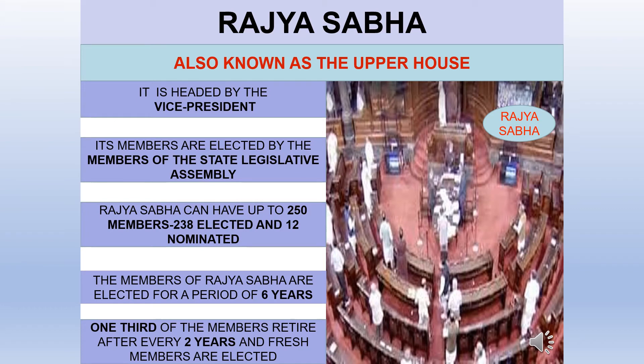Rajya Sabha. It is also known as the upper house and is headed by the Vice President. Its members are not directly elected by the people — they are elected by the members of the State Legislative Assembly. It can have up to 250 members: 238 elected and 12 nominated by the President. Members of the Rajya Sabha serve a term of 6 years; one third of the members retire after every 2 years and fresh members are elected.